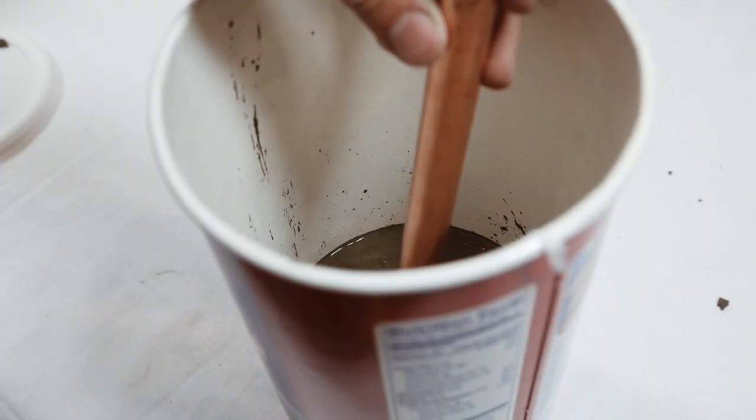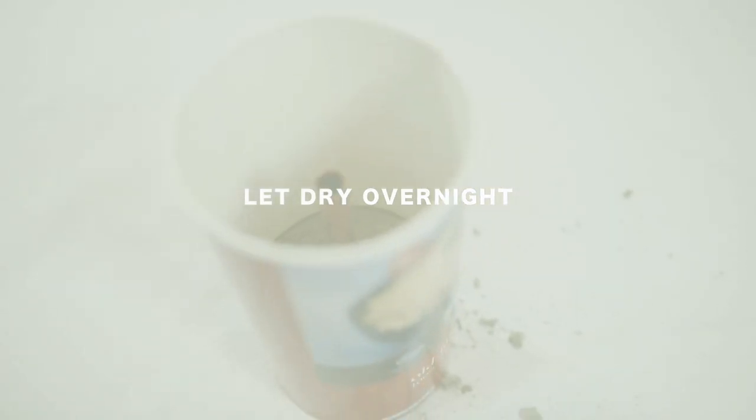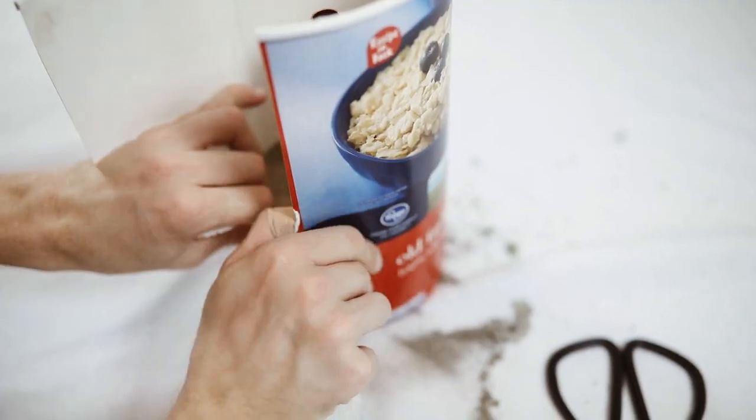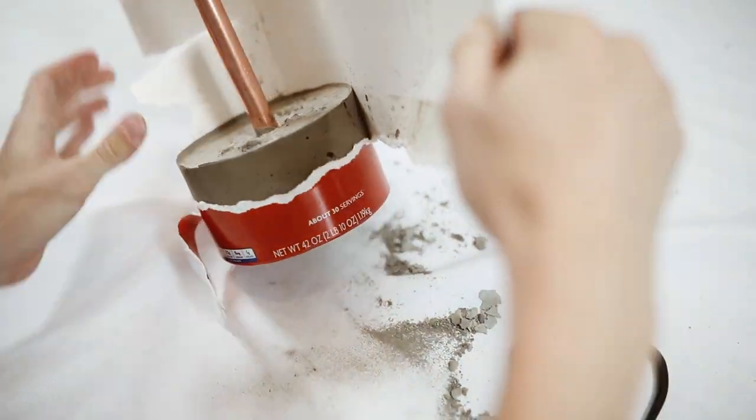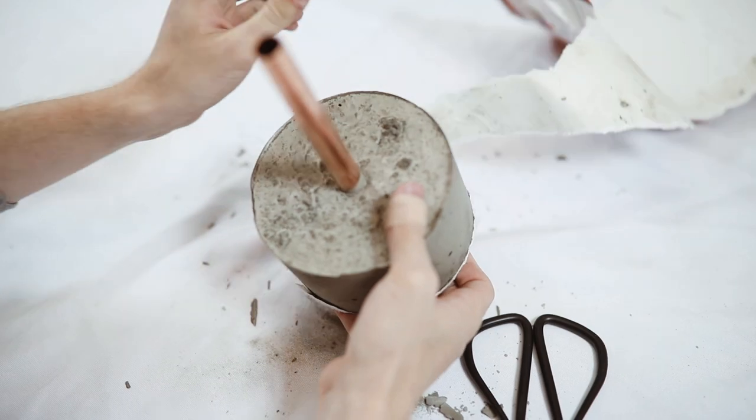And then I put this copper pipe in there, let it dry overnight, and then once it's dry in the morning time you can actually cut away the oatmeal container and it's gonna look exactly like this. It's really incredible, so easy. And these copper pipes I just picked up at Home Depot for about a dollar each, so they're pretty affordable.